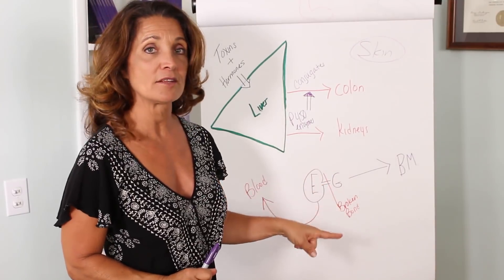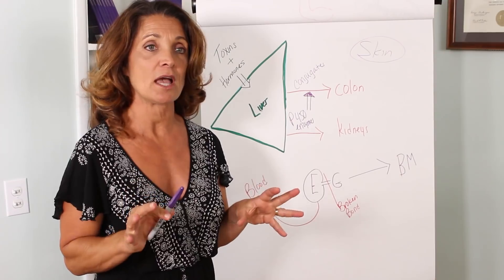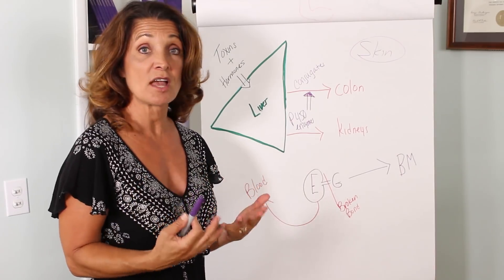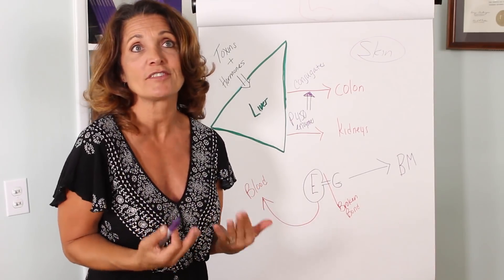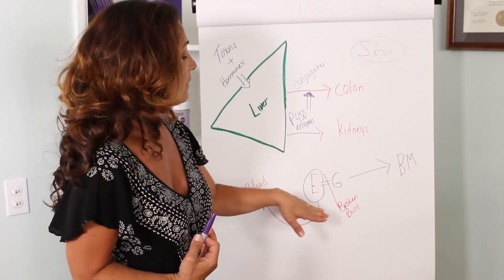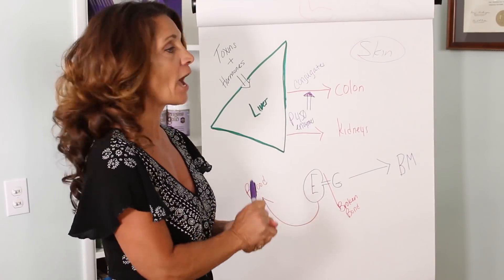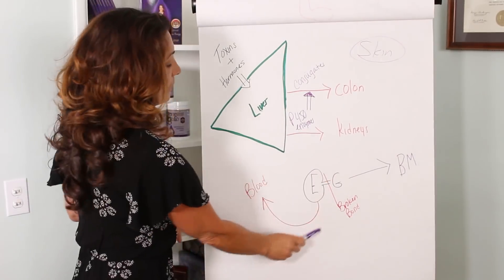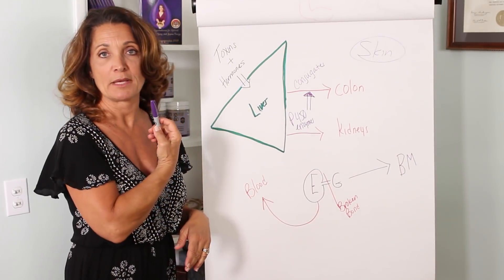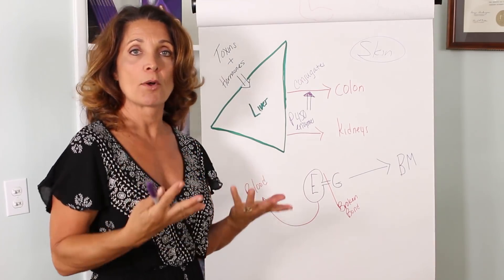But if your gut's out of balance and your friendly bacteria are not sufficient enough and there's any pathogens in there or there's just not enough friendly bacteria, these bonds get broken by enzymes produced by the imbalanced gut bacteria and now you're releasing hormones to be recycled back into the bloodstream again, creating a hormonal overload.